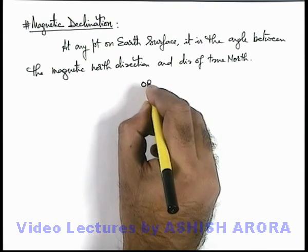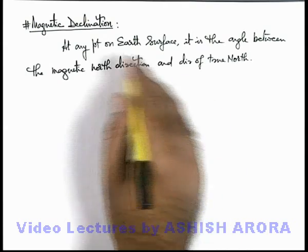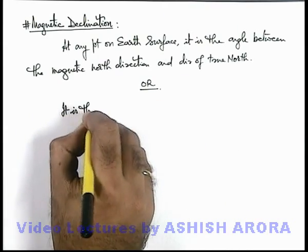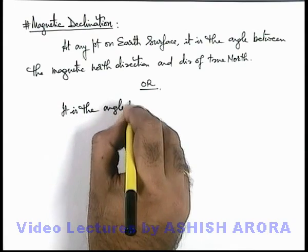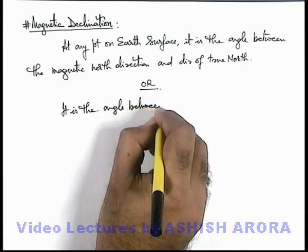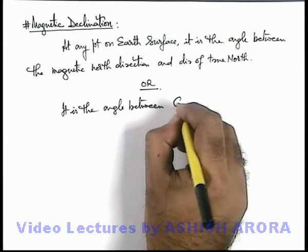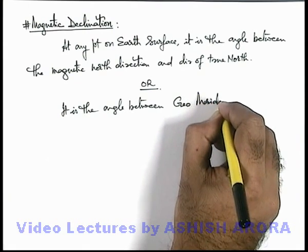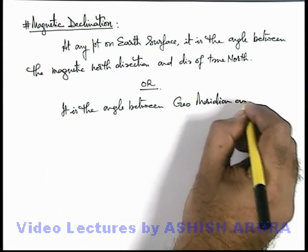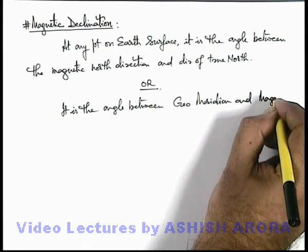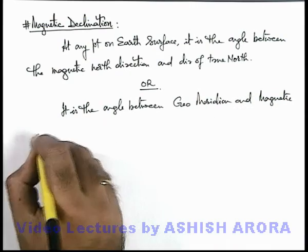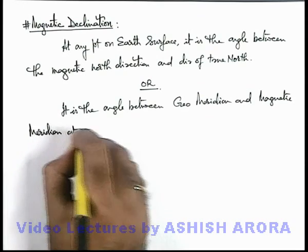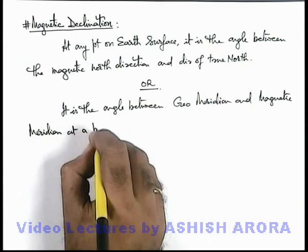We can also define the angle of declination as the angle between the geographic meridian and the magnetic meridian at a point on earth's surface.